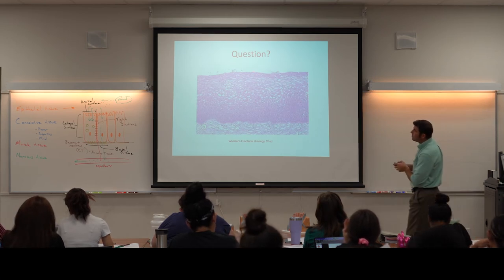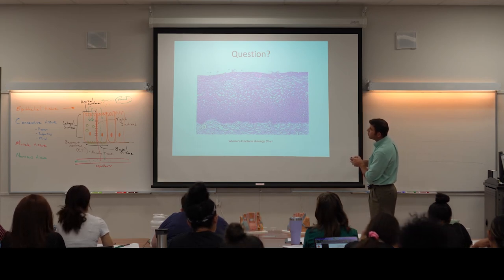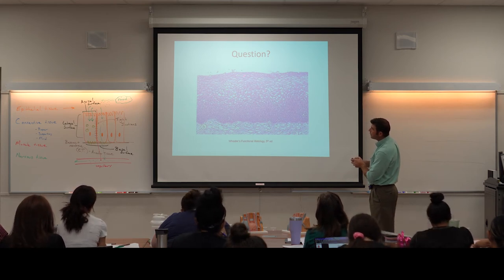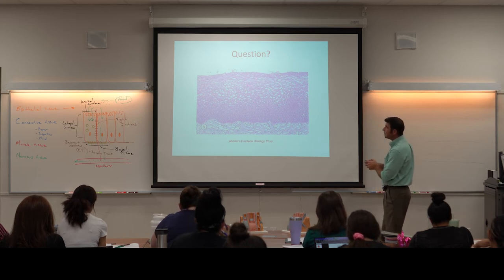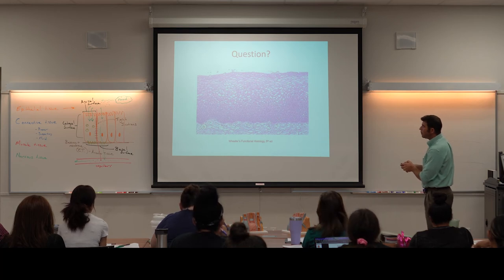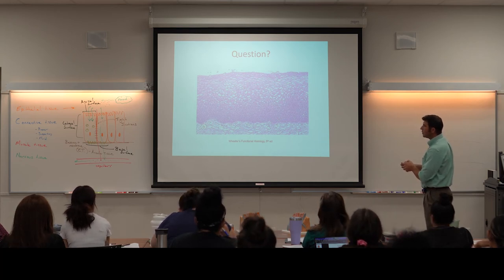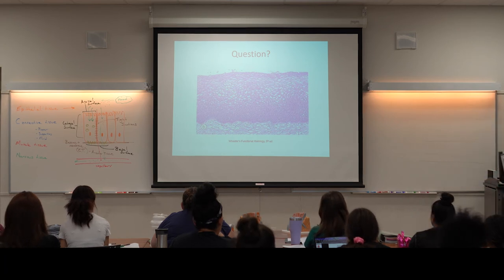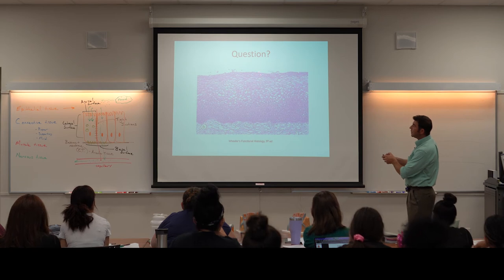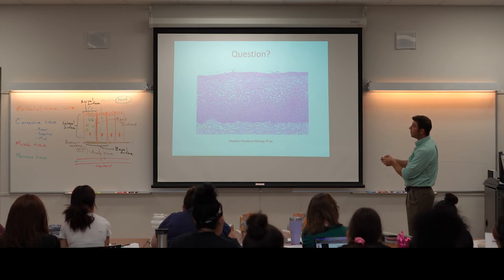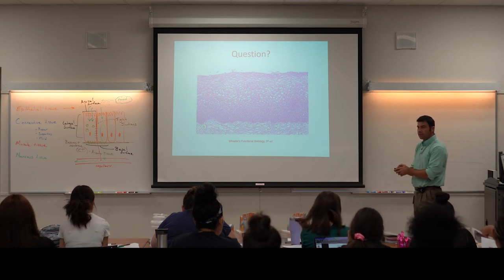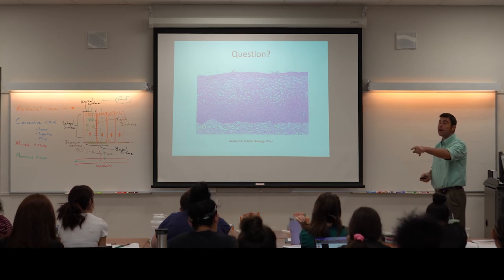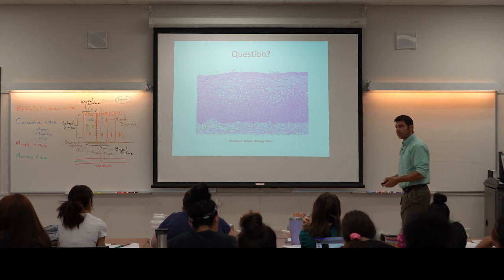The next image shows multiple layers of cells and we can still see nuclei in each of them. If it were transitional, we'd see cells become larger and more plump on the surface — that's not what we're seeing. This is stratified squamous epithelial tissue, specifically the non-keratinized version, since we can still see the nuclei.